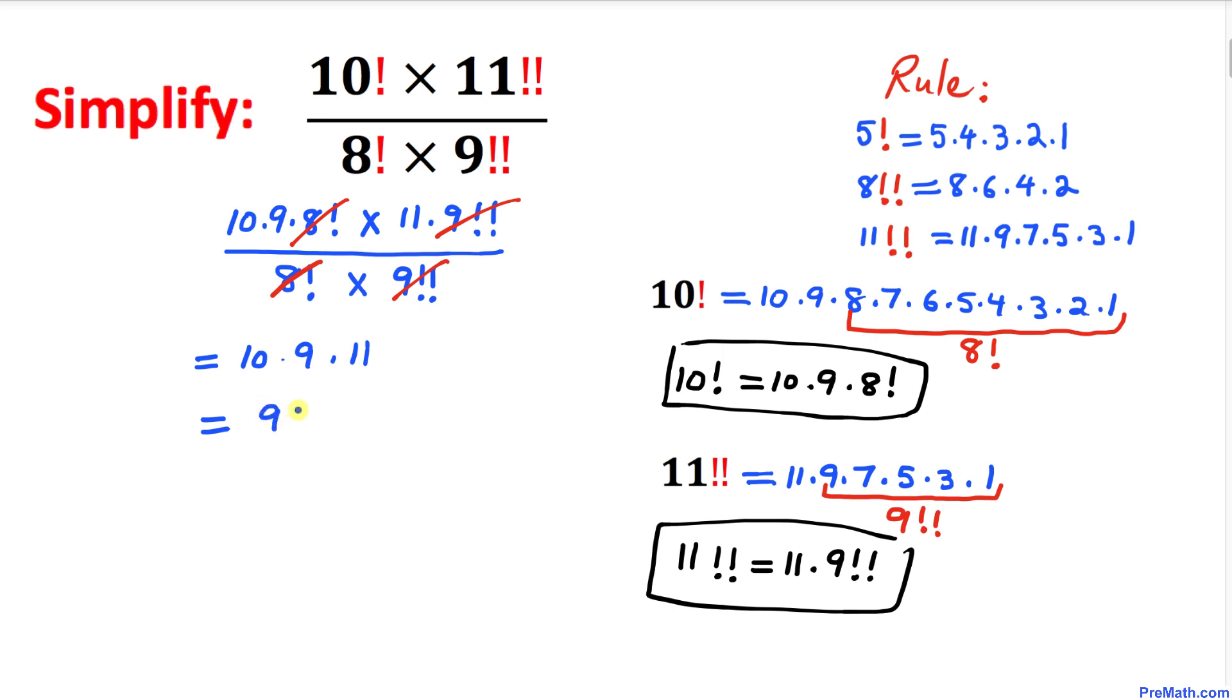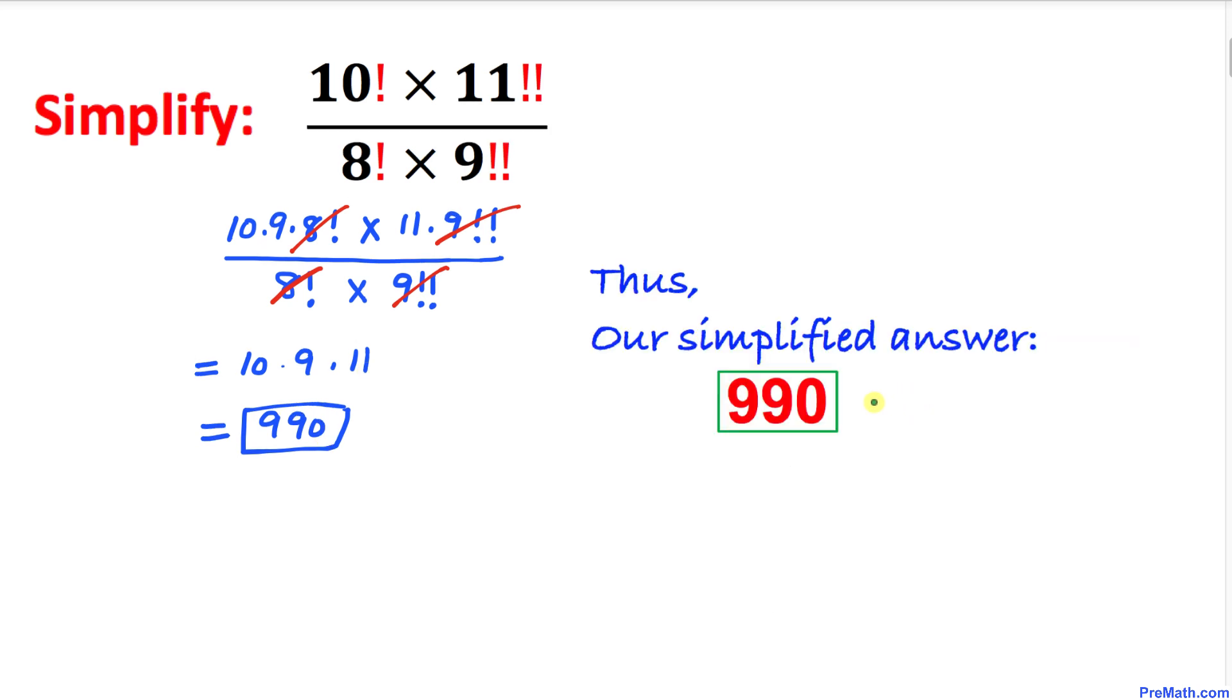And if we multiply that, it is going to give us 990, and that's our final answer. Here's our 990 as our final simplified answer.